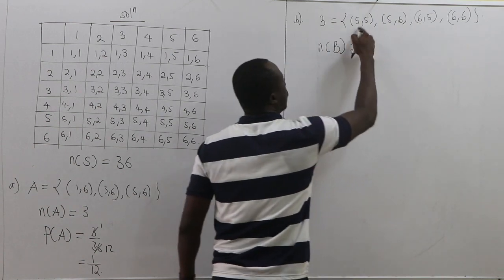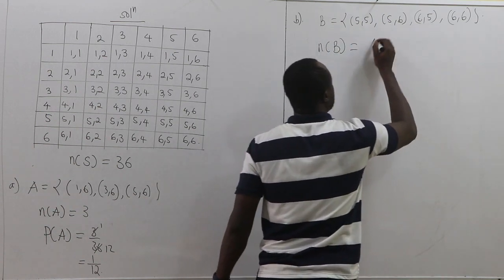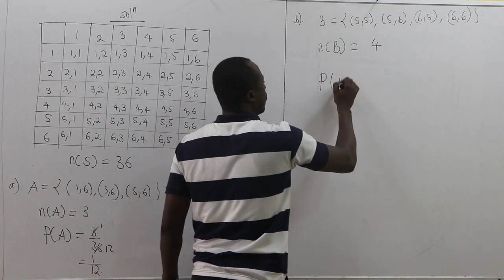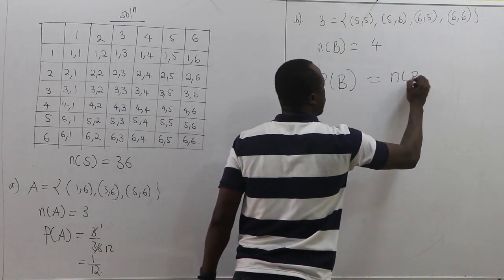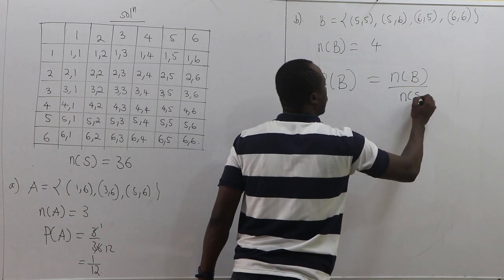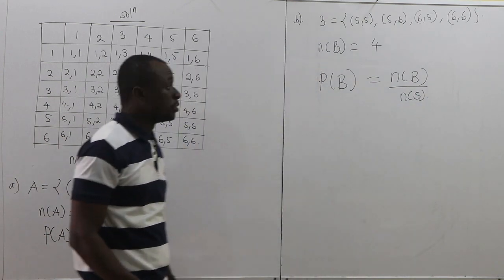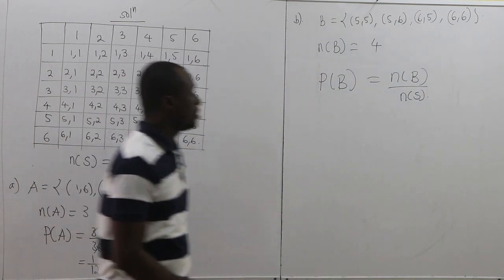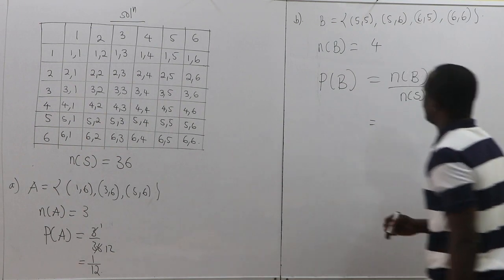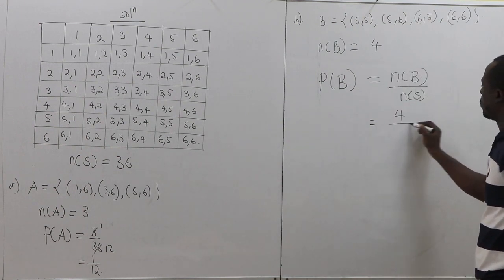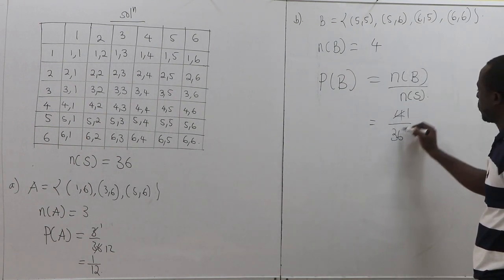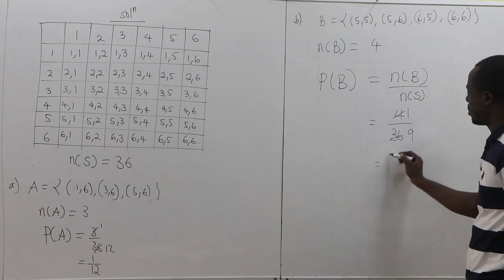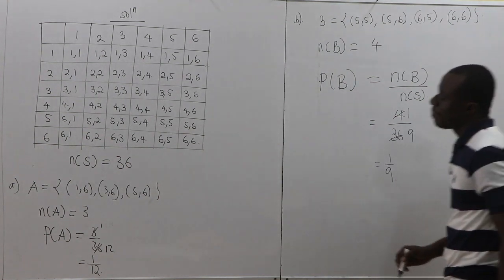The number of outcomes in event B is four: (5,5), (5,6), (6,5), (6,6). Probability of B equals number of B outcomes over sample space size, so P(B) = 4/36 = 1/9.